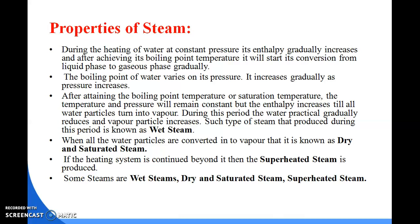That mixture of water particles and steam during the heating period is known as wet steam. During this period, water particles gradually reduce and vapour particles gradually increase. After attaining the saturation temperature, the temperature and pressure remain constant but enthalpy increases till all the water particles turn into vapour. Such type of steam produced during this period is known as wet steam — it is nothing but a combination of some dry steam and water particles in suspension.